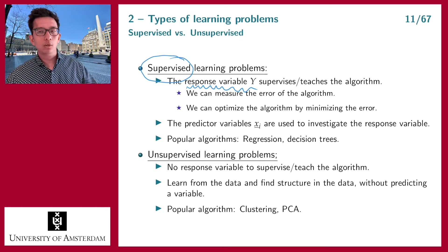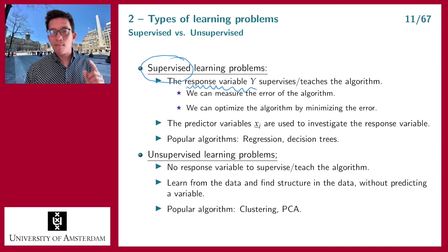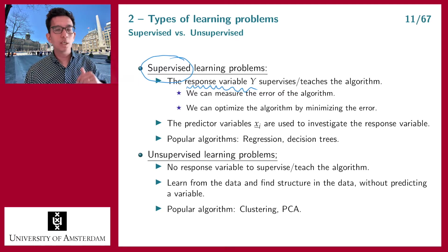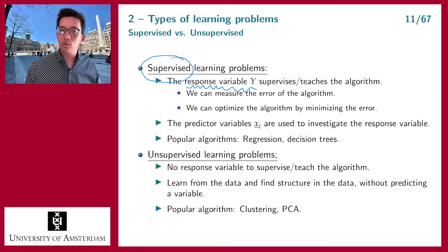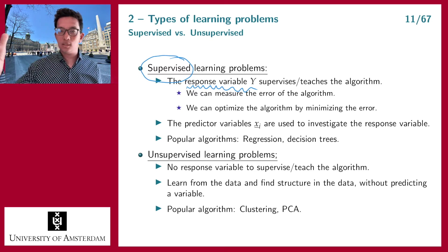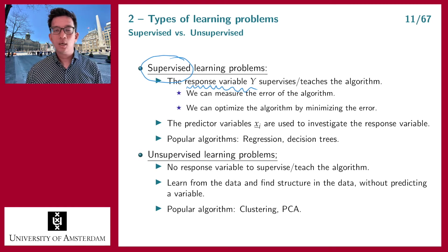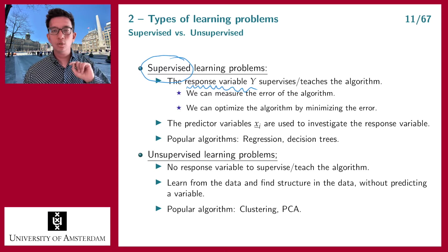If someone had four claims and you predicted four, you predicted correctly — very good. If the next person had three claims and you predicted two, you didn't predict the exact number but you're still close. Then if someone had no claims at all and you predicted six, that's very bad. That's what we mean by supervised learning: there is a supervisor — the response variable — that tells us whether we are doing a good job or not.